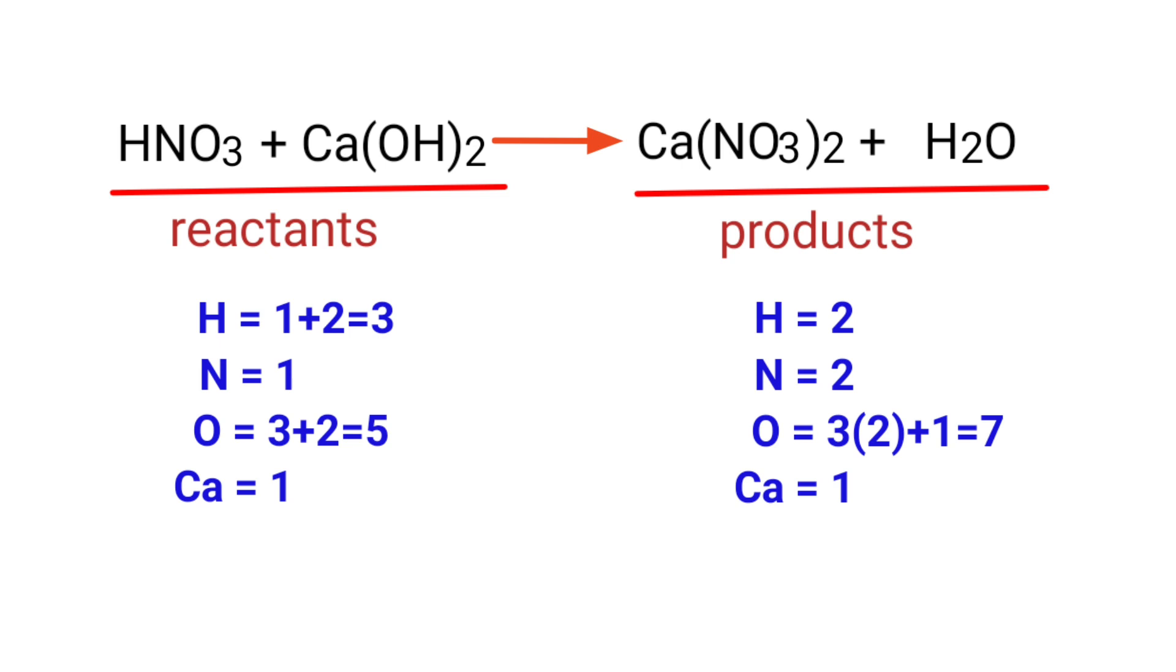In this equation we need to balance the nitrogen atoms first. To do this we need to put a coefficient of 2 in front of HNO3. The nitrogen atoms are balanced.